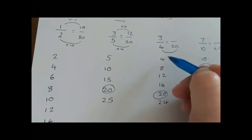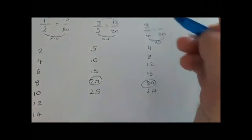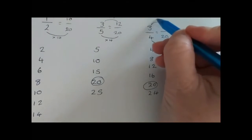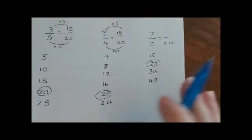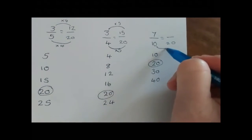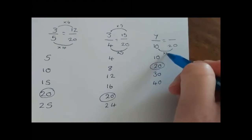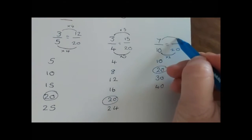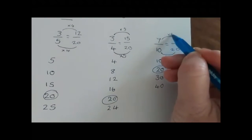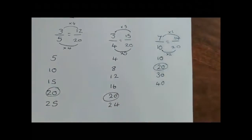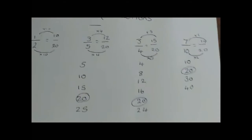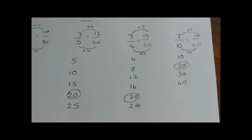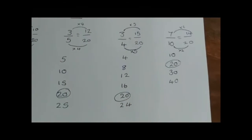For the fraction with denominator 4, what do I do to 4 to get to 20? I multiply it by 5, so I multiply the numerator by 5, which gives me 15 — that's 15 over 20. Finally, what do I do to 10 to get to 20? I multiply it by 2, and multiplying the numerator by 2 gives me 14 — so that's 14 over 20.